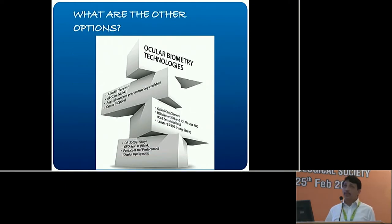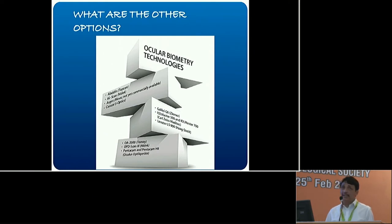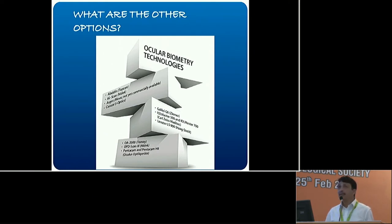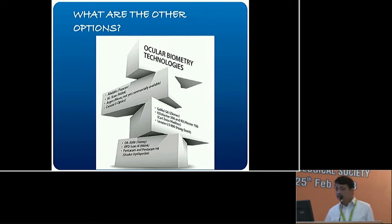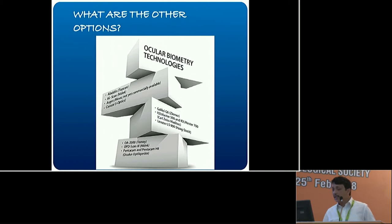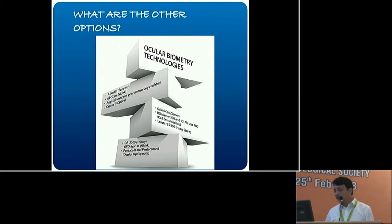What options are available in the market? There are plenty — at least eight or nine companies emerging. You can see the Aladdin by Topcon, the ALScan, the Nidek Argos (not yet released), Cassini, the Galilei by Ziemer, the IOL Master, the Lenstar, and many others.